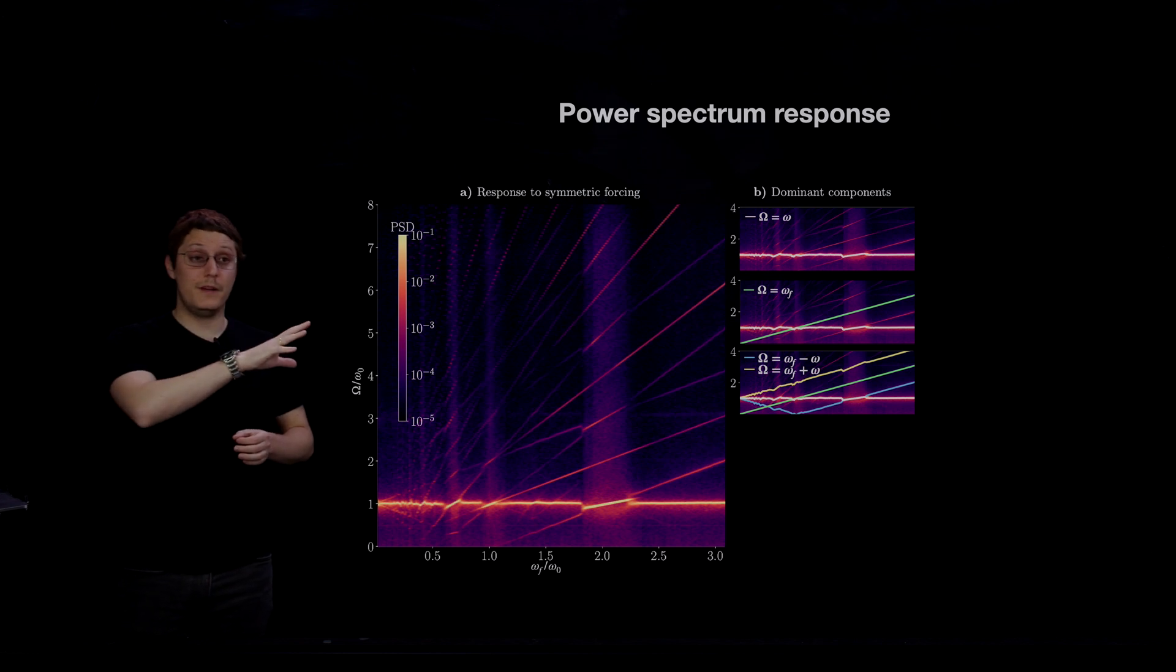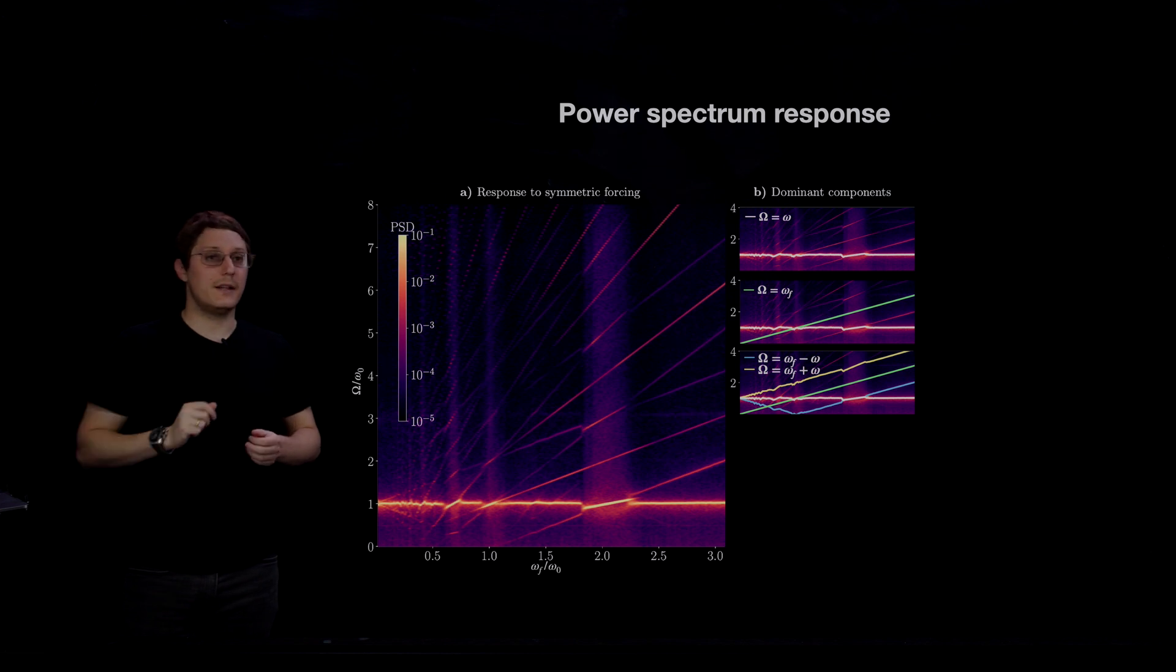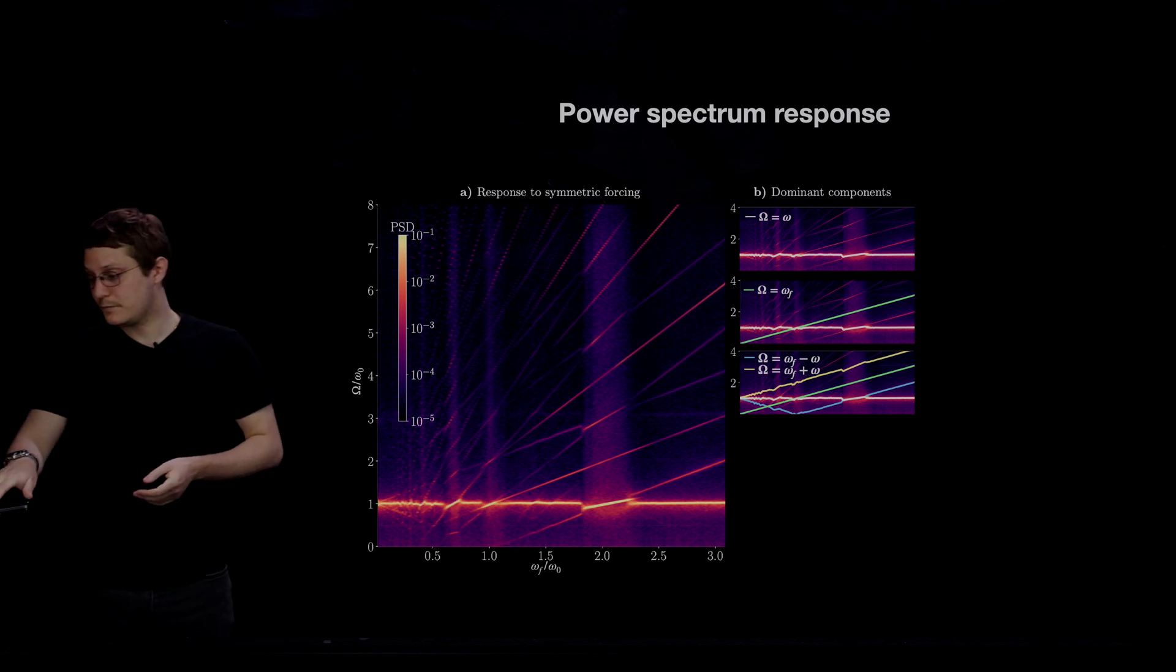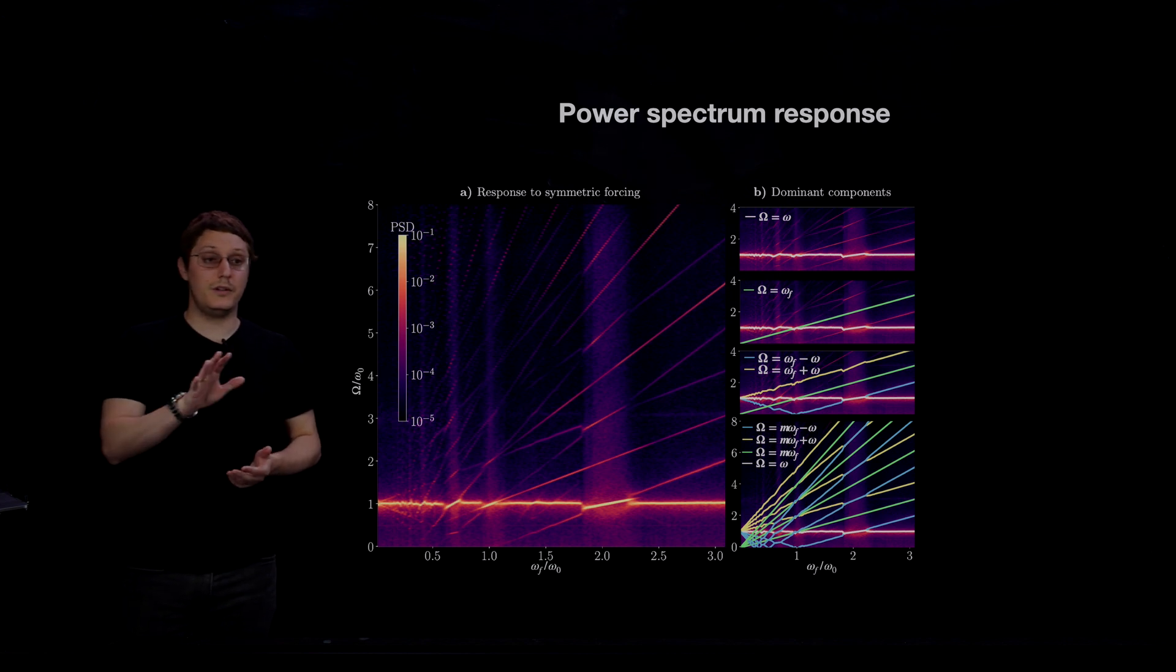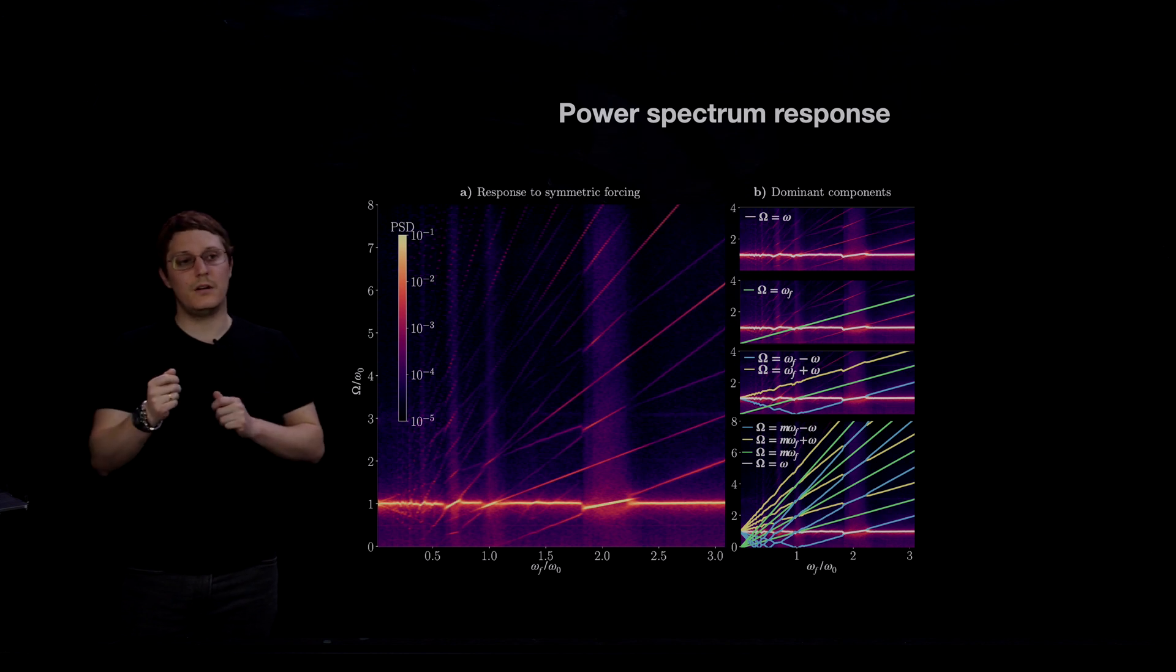So these frequency components colored in yellow and light blue are much fainter for the case of antisymmetric forcing, meaning that triadic interactions play a much lesser role in the wake response of antisymmetrically forced flows as compared to symmetrically forced. Finally, to complete the picture, all the other features that you see here can be explained either as higher harmonics of the forcing or the non-linear interactions between the wake and these higher harmonics.